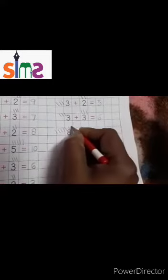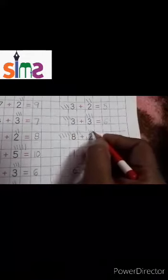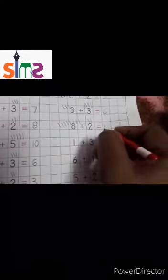Eight: one, two, three, four, five, six, seven, eight. Two: one, two. Count all the lines: one, two, three, four, five, six, seven, eight, nine, ten. Eight plus two is equal to ten.